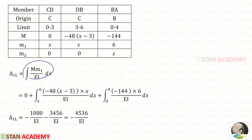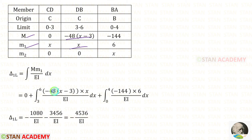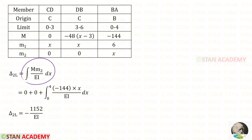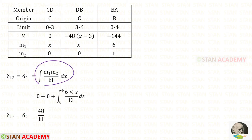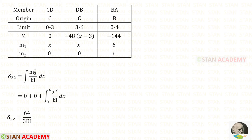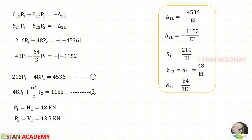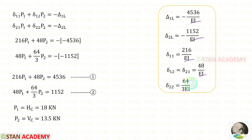Using the unit load method formula, we can find delta 1L. For CED, M is 0 so no integration is needed. For DB the limit is 3 to 6, and for BA the limit is 0 to 4; we apply M and M1 accordingly. Using a calculator to perform these integrations, we obtain delta 1L. Similarly, using the appropriate formulas we find delta 2L, delta 1 1, delta 1 2, delta 2 1, and delta 2 2. We then apply these values into the two compatibility equations — EI cancels out as it is eliminated.